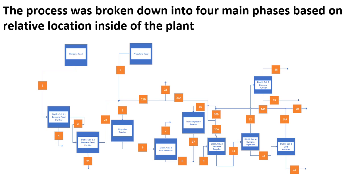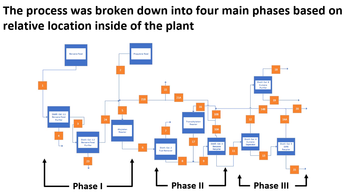A block flow diagram was drafted based on research found from cumene processes currently in industry. Processes researched include ExxonMobil's Badger Cumene process, UOP Qmax process, and Richard Turton's process found in the Synthesis of Chemical Processes textbook. Here you can see our block flow diagram, with Phase 1 at the beginning, Phase 2 in the middle, and Phase 3 near the end. Phase 4 is not depicted but will be explored in depth on the preceding slides.